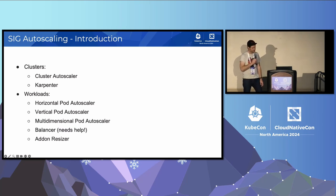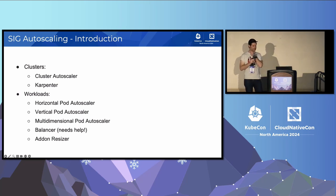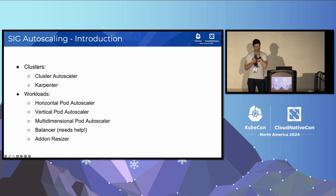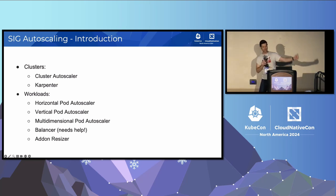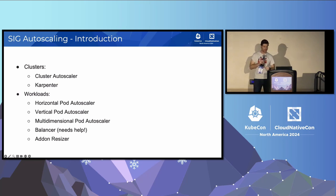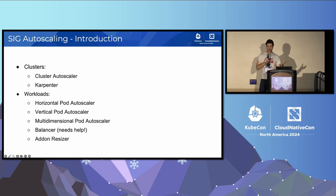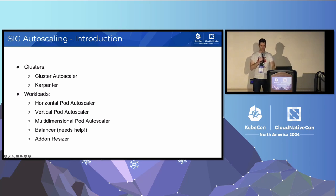Introduction about SIG Autoscaling. The charter cuts across two dimensions: clusters and workloads. For clusters, we have projects like Cluster Autoscaler and Karpenter. For workloads, we have Horizontal Pod Autoscaler (HPA), Vertical Pod Autoscaler (VPA), an emerging proposal called Multidimensional Pod Autoscaling — which combines HPA and VPA — a prototype project called Balancer that would love some help as it's stalled, and Addon Resizer, which has been around for a long, long time.